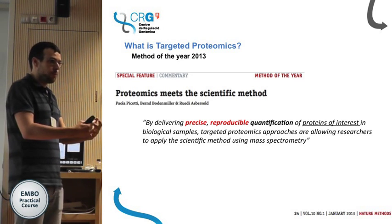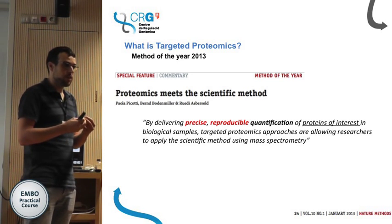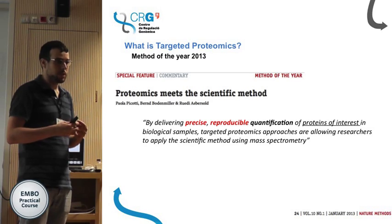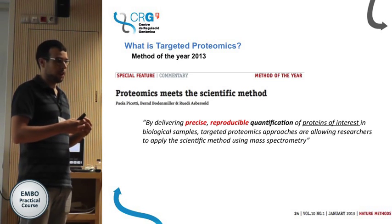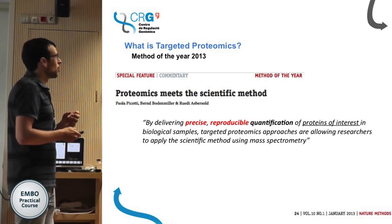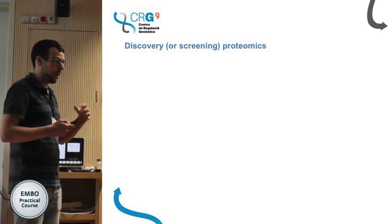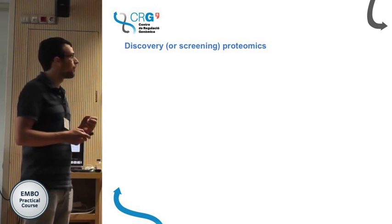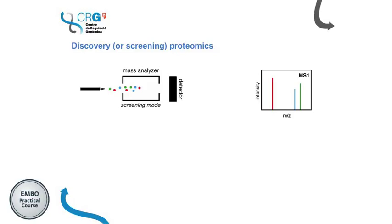Now we will move forward to the particularities or details on the workflow — how we operate the mass spectrometers to actually acquire and analyze this type of targeted datasets. First, I would like to review the screening or discovery proteomics workflows and how the mass spectrometers are operated in this mode. As you know, we have a chromatographic column, and from this column in screening proteomics there are a lot of analytes — thousands of peptides that are eluting. We have a mass analyzer operating in a screening mode, so we have an MS1 spectrum where we record the mass and the intensity.